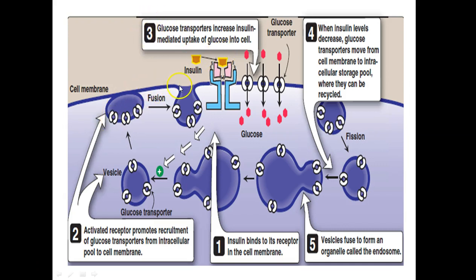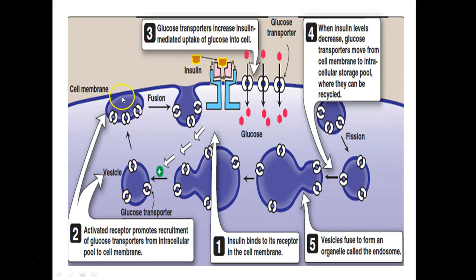Here we can see how GLUT molecules — glucose transporter molecules — are initiated, how they come to the membrane and help in the movement of glucose. When insulin binds to the receptor, which has alpha and beta subunits, the activated receptor promotes the recruitment of glucose transporters from the intracellular pool to the membrane, increasing insulin-mediated glucose uptake.